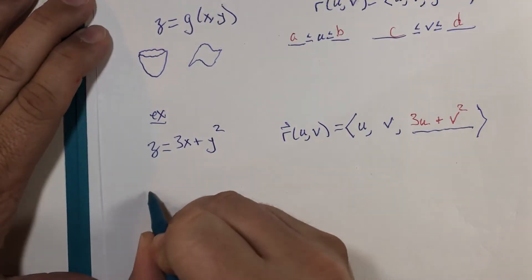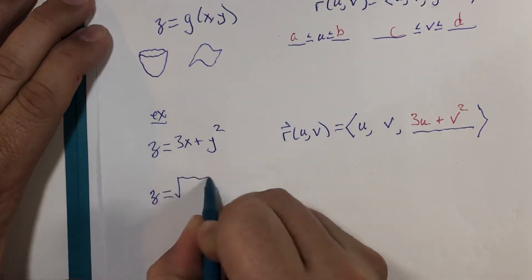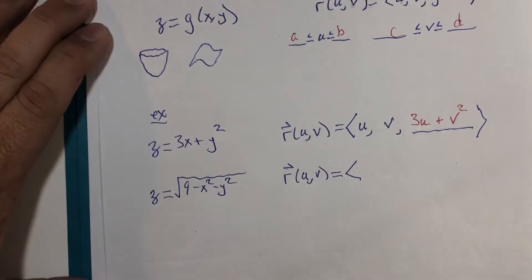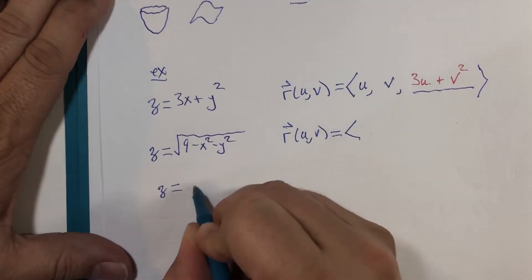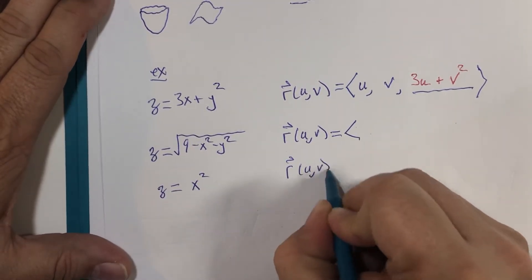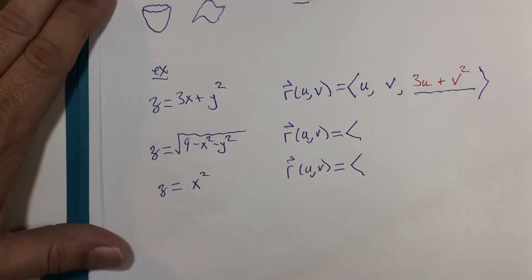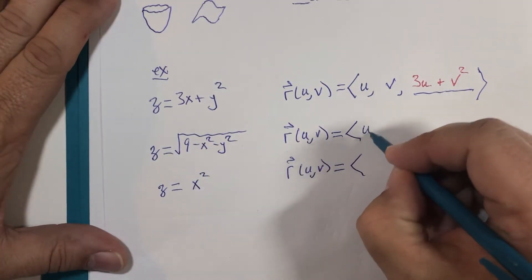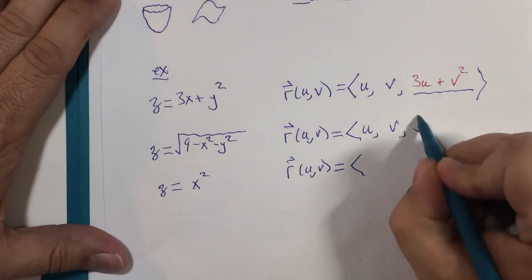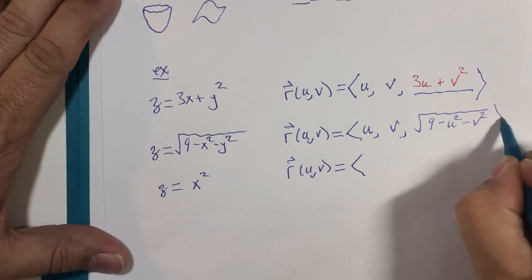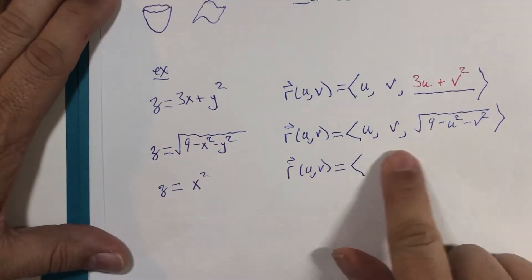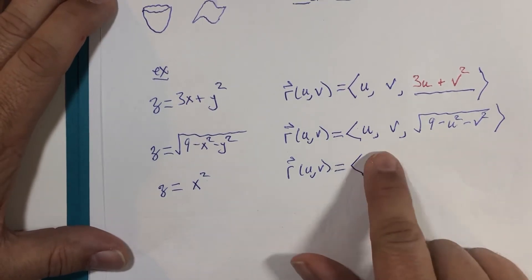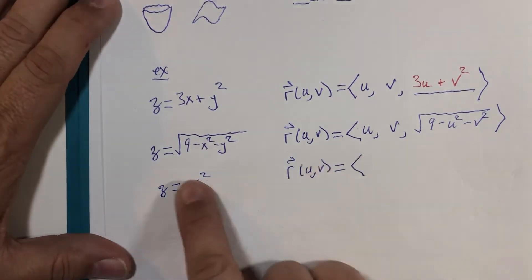Let's do two more examples. Maybe z equals the square root of 9 minus x squared minus y squared — take a shot at that one. And one more: z equals x squared. Hit pause and try those. The answer for the first: input u and v, output square root of 9 minus u squared minus v squared. This three-variable surface is now written with only two variables — even though there are three components, there are only two variables.